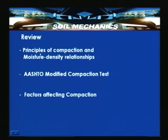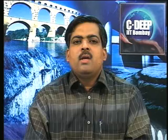In the previous lecture we covered principles of compaction, moisture density relationships, and the role of water in the compaction process. We also studied the aceto modified compaction test - the two laboratory methods being standard proctor compaction and modified compaction. We also introduced the zero air voids line, discussed differences between the two tests, and covered factors affecting compaction. This lecture continues with soil structure and compactive effort, then proceeds to field compaction.